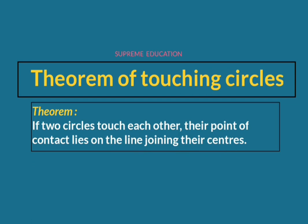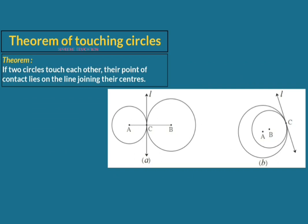The first step to prove this theorem is to draw a proper diagram. We have to draw both types of touching circles — externally touching circles and internally touching circles. In the diagram, circles with centers A and B touch each other at point C, both externally and internally. Line L is their common tangent and C is their point of contact. This is the given information.